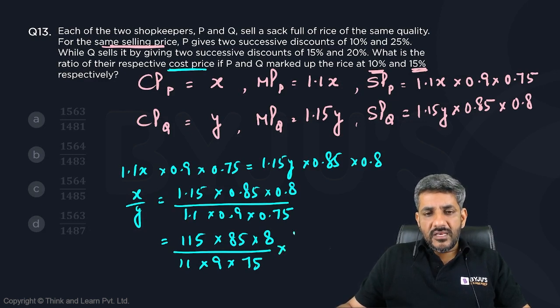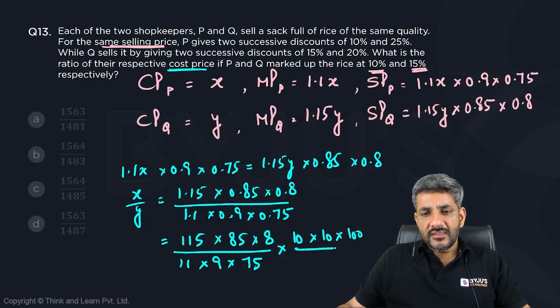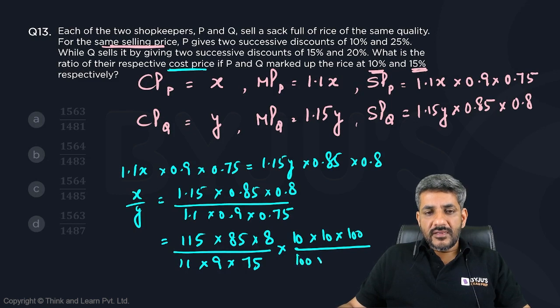Then 11 will leave 10 in the numerator, 9 will leave 10 in the numerator, 0.75 will leave 100 in the numerator. 1.15 will leave 100 in the denominator, 0.85 would leave 100 in the denominator, 0.8 would leave 10. The 100s cancel out, leaving only 10 in the denominator.